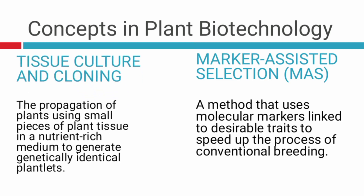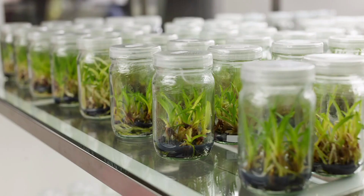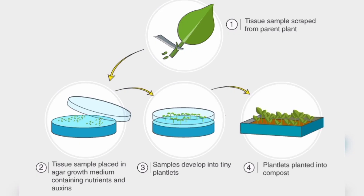Tissue culture and cloning: imagine a photocopy machine — when you have one paper you can photocopy many copies from just the original. That is what tissue culture is. You can take a leaf, a root, or any part of a plant and generate many copies of that plant. You don't have to go through the stress of planting seeds and waiting for them to grow. You can develop plants from any plant part, which is why it's called cloning.